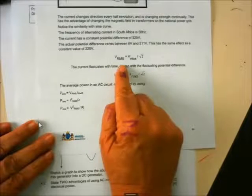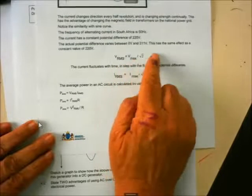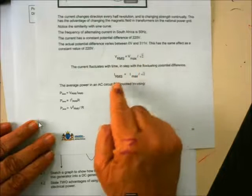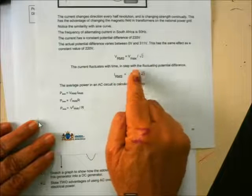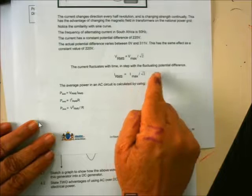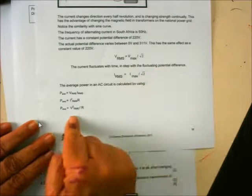Here are our formulas. VRMS is equal to Vmax divided by the square root of 2. IRMS is equal to Imax divided by the square root of 2. And then there are my formulas that I'm going to use. So let's quickly see what have they given us in this case.